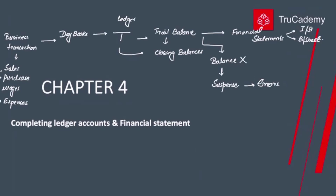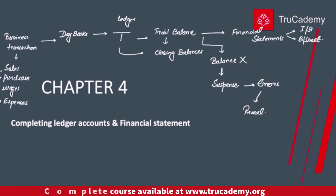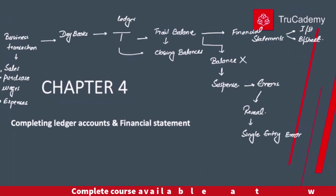Why didn't the trial balance get balanced? Because there are some errors. Some errors will be revealed by the trial balance. We're preparing the trial balance, it didn't balance, so there is an error — this error is revealed by the trial balance. One such error is the single entry error.